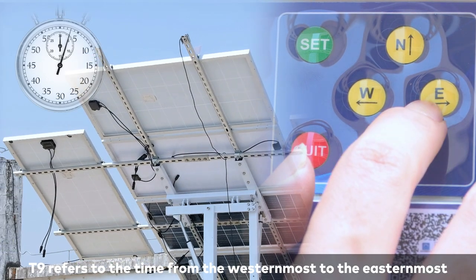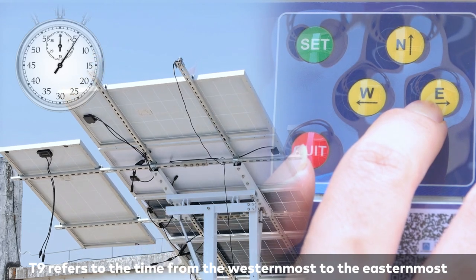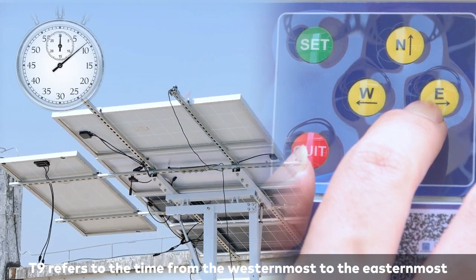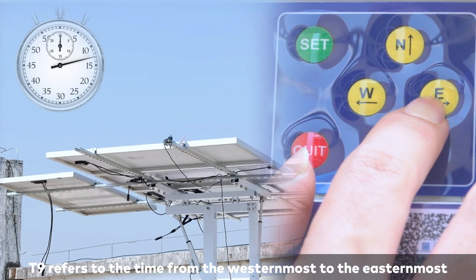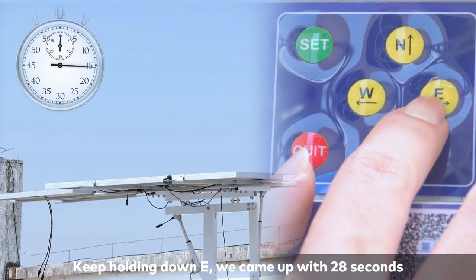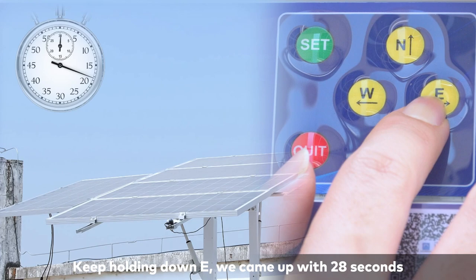T9 refers to the time from the westernmost to the easternmost. Keep holding down E. We came up with 28 seconds.